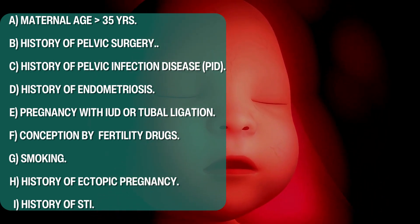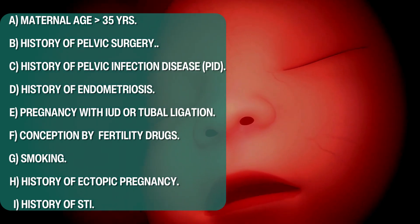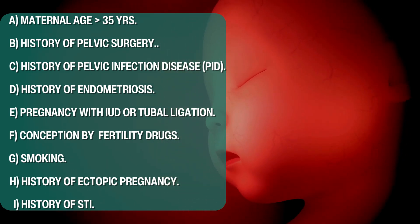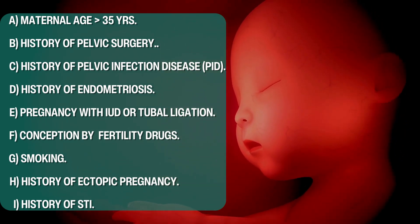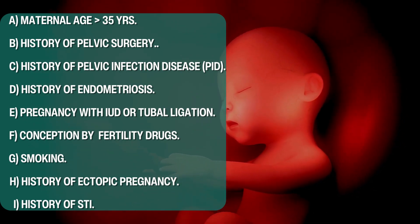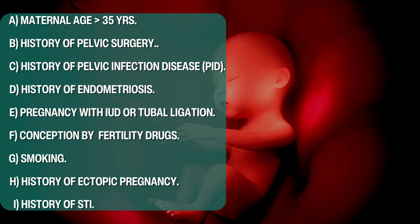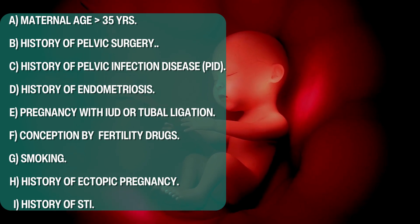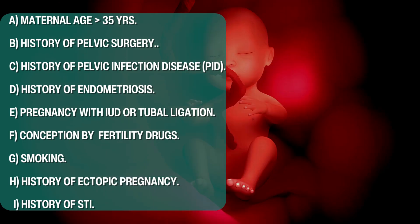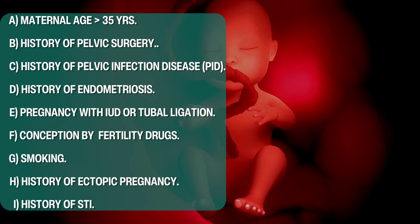A history of pelvic inflammatory disease, which is an infection that spreads into the abdomen causing inflammation and scarring, is also a risk factor. Endometriosis is strongly associated with ectopic pregnancy, as it is known to cause scarring and inflammation of the fallopian tube. Pregnancy with an intrauterine device, post-tubal ligation, or post-tubal reversal surgery are additional risk factors.